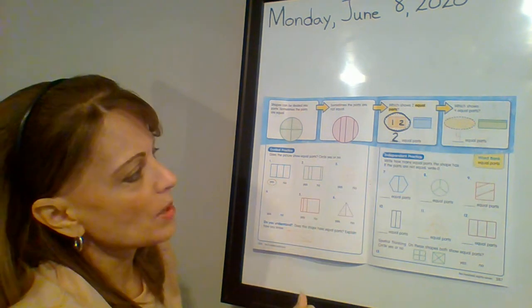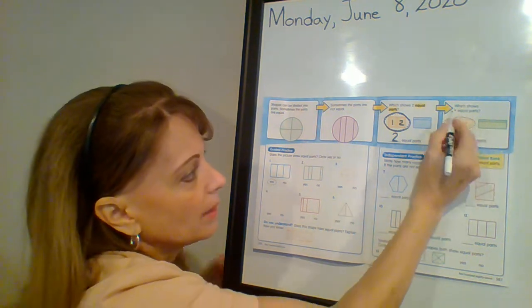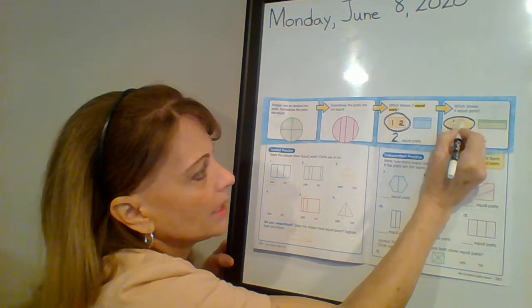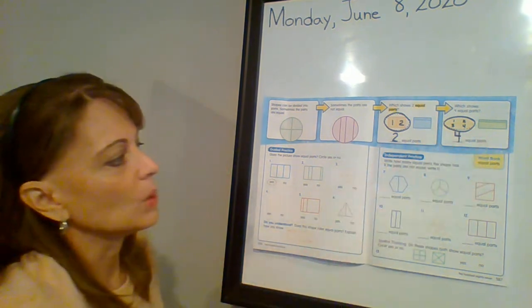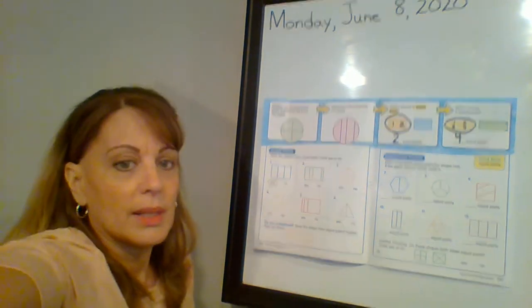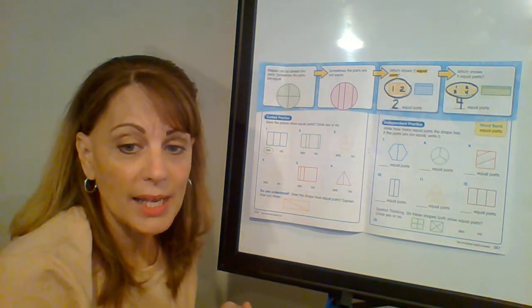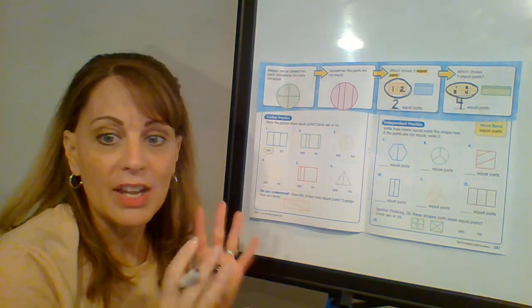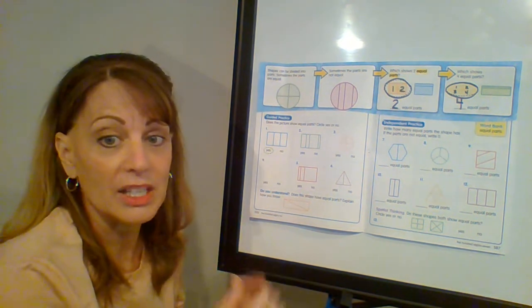Which shows four equal parts? Well, that one only has two parts. So can't be that one. But this one, you can clearly see one, two, three, four. Those are four equal parts. So let's look at our guided practice. If you hear a lot of banging in my house, I apologize. Our air conditioning broke and they're here today to fix it. So if you hear a lot of banging, that's them going up and down the stairs.